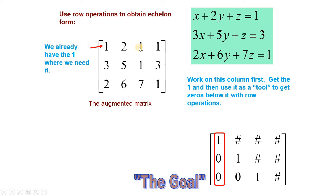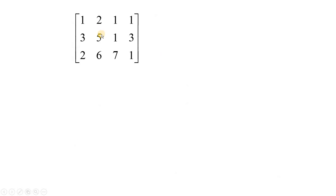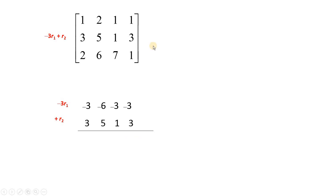r2 minus three times r1: we will use the row operation r2 minus three times r1 — multiply elements of the first row by minus three and then add with elements of the second row. That's why here we will get zero and here we will get the new values. تو یہاں پہ minus three سے multiply کرتے ہیں اور add کرتے ہیں — تو یہ والا number zero بنے گا۔ اب next target یہ ہوگا کہ یہ two zero بنے۔